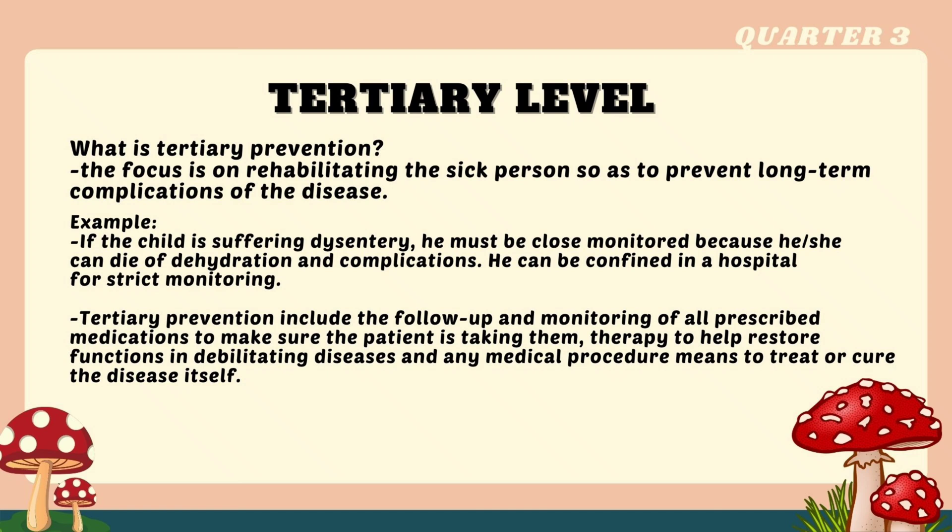he must be closely monitored because he or she can die of dehydration and complications. The child can be confined in a hospital for strict monitoring. Tertiary prevention includes follow-up and monitoring of all prescribed medications to make sure the patient is taking them, as well as therapy to help restore functions in debilitating diseases and any medical procedures to treat or cure the disease itself.